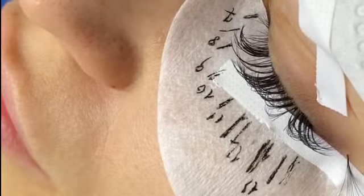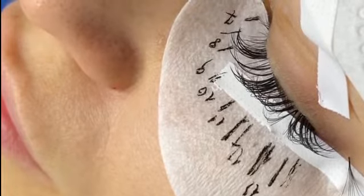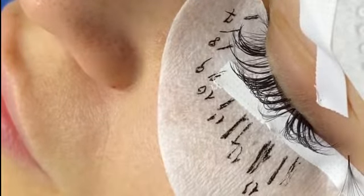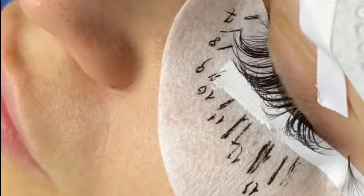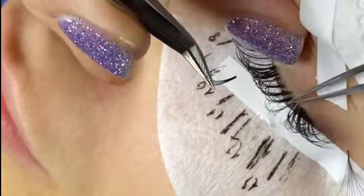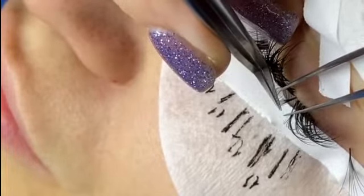Now, the other thing that's really important is the surface area. When you apply the fan, you have to make sure there's at least two to three millimeters of contact between the client's natural lash and the actual fan that you're applying. That is extremely important.